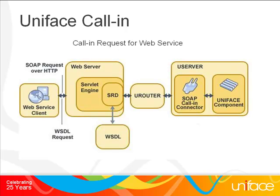The calling request for a web service works in this way. A client makes a request for a WSDL and sends it to the web server that redirects the request to the SRD servlet. The SRD accesses the WSDL and passes it back to the web server, which passes it back to the client.